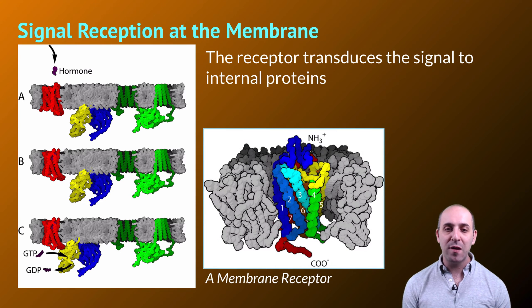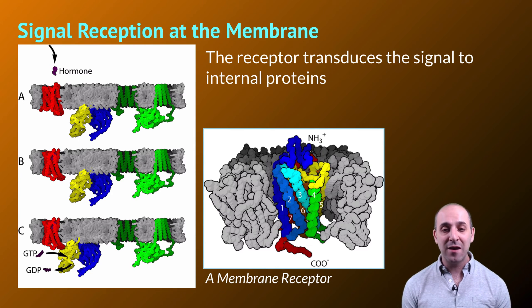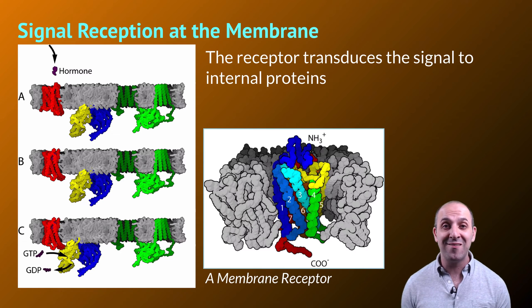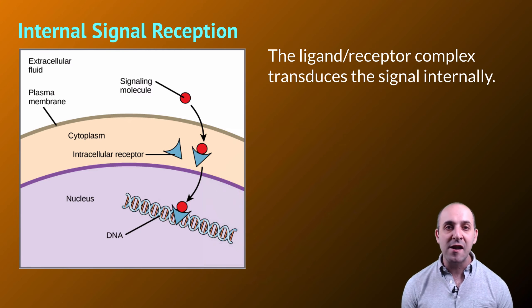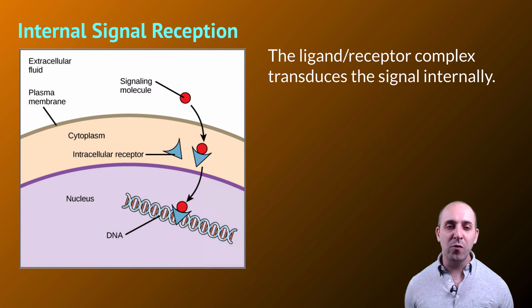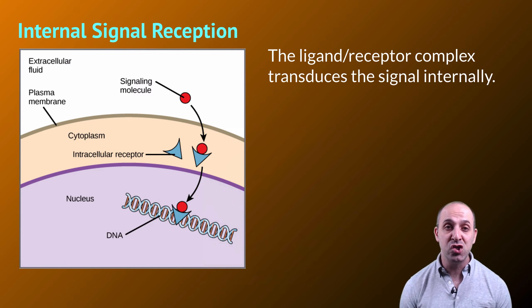A membrane receptor has a domain outside of the cell that interacts with the ligand and a domain inside of the cell that interacts with the other proteins in that signal transduction pathway. The process by which lipid-based ligand messages are received is not all that different. The main difference is that the receptor is inside the cytoplasm and interacts with the ligand after it enters the cell. Then generally the receptor-ligand complex is the molecule that will go and activate a cellular response directly, which is usually a change in gene expression.